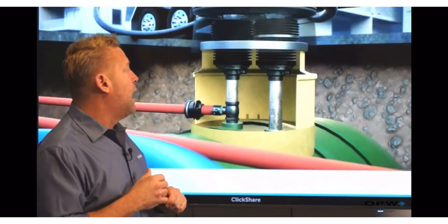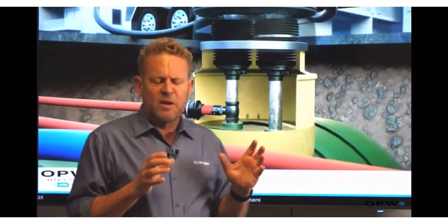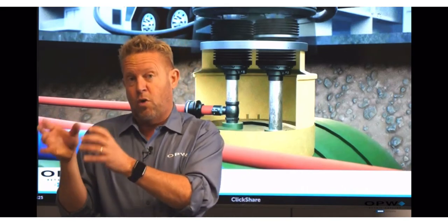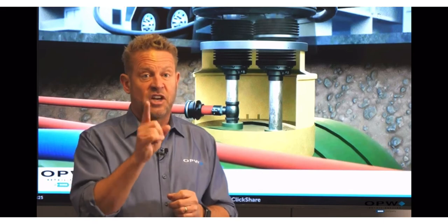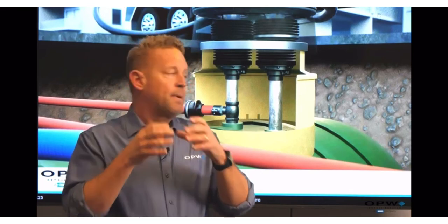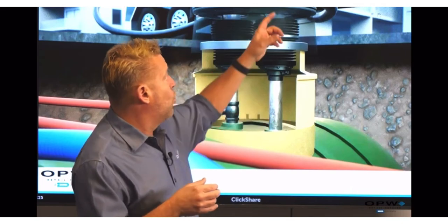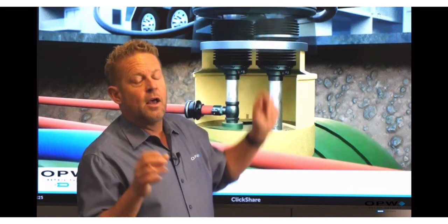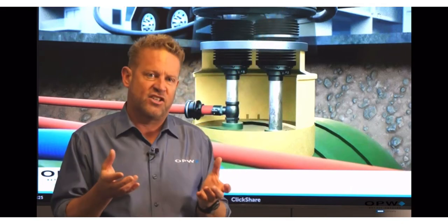In some cases, especially in older tanks, when we started going over to or requiring stage one vapor recovery, they may not have had enough openings on their tank to have a two-point, so they will use what's called a single-point fill. The way that works is there's one riser pipe and one hose, but the hose is actually what we call coaxial, coaxial meaning kind of a hose within a hose.